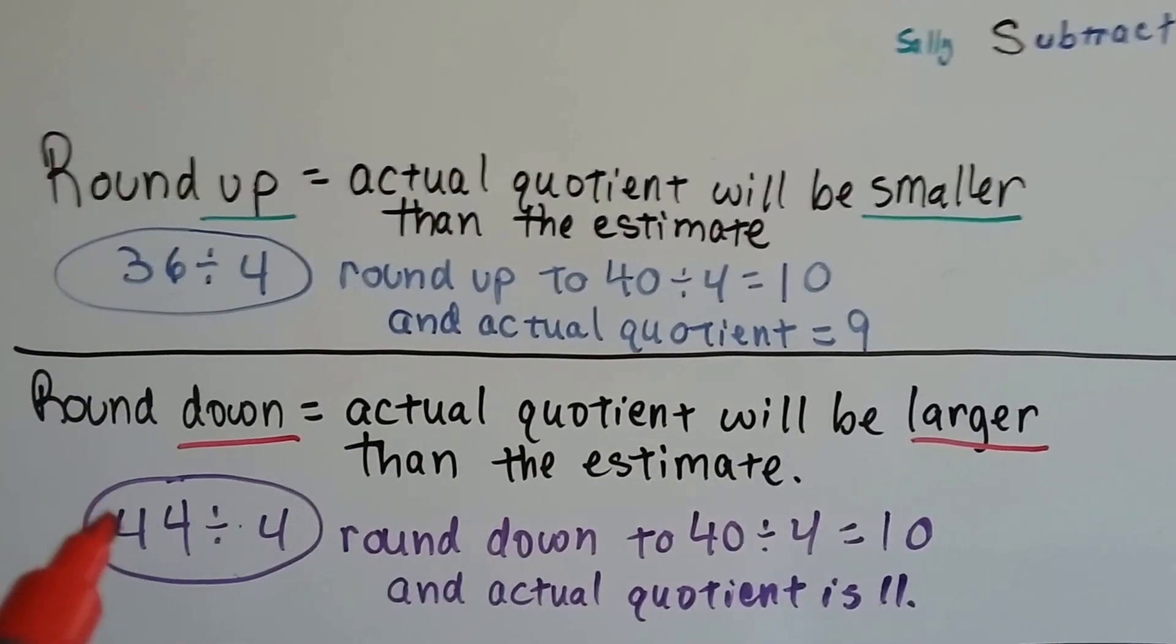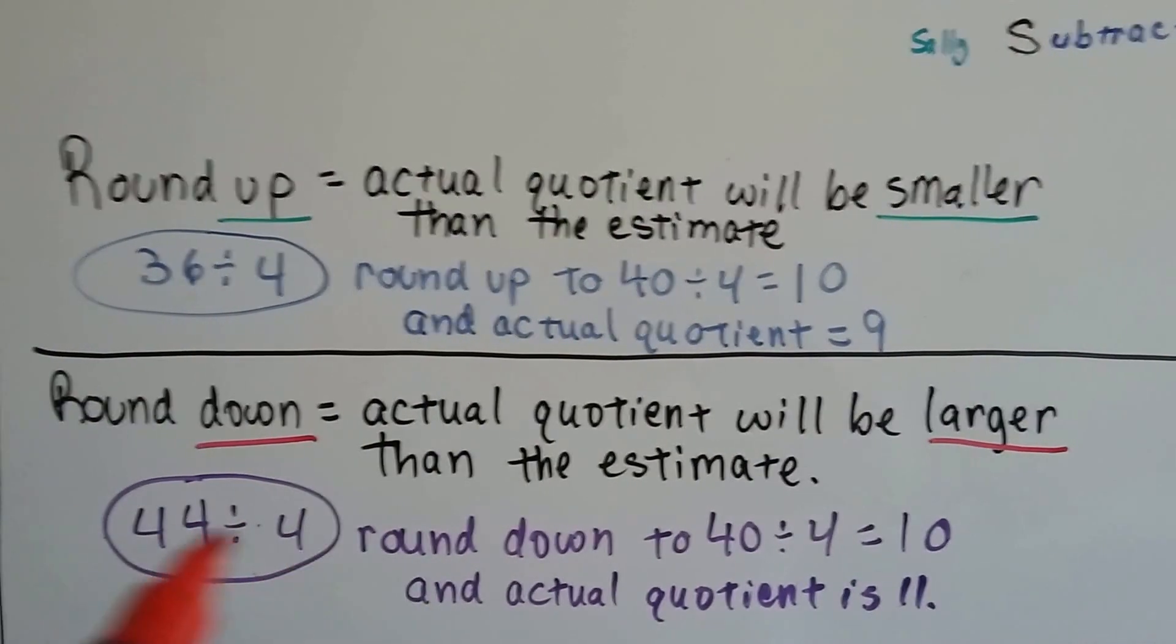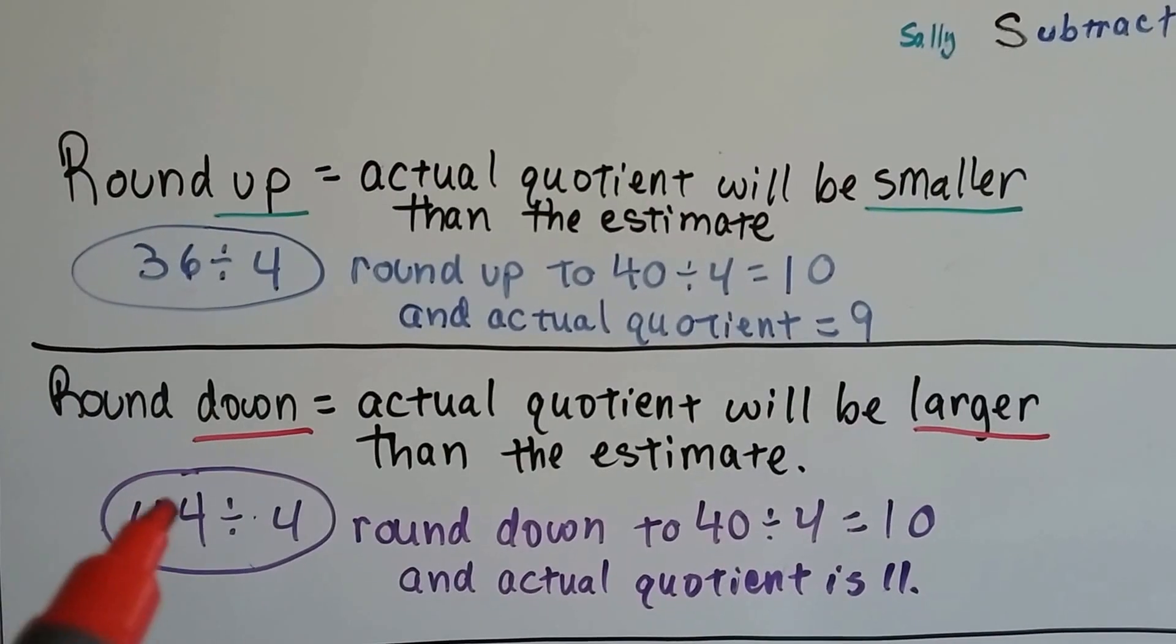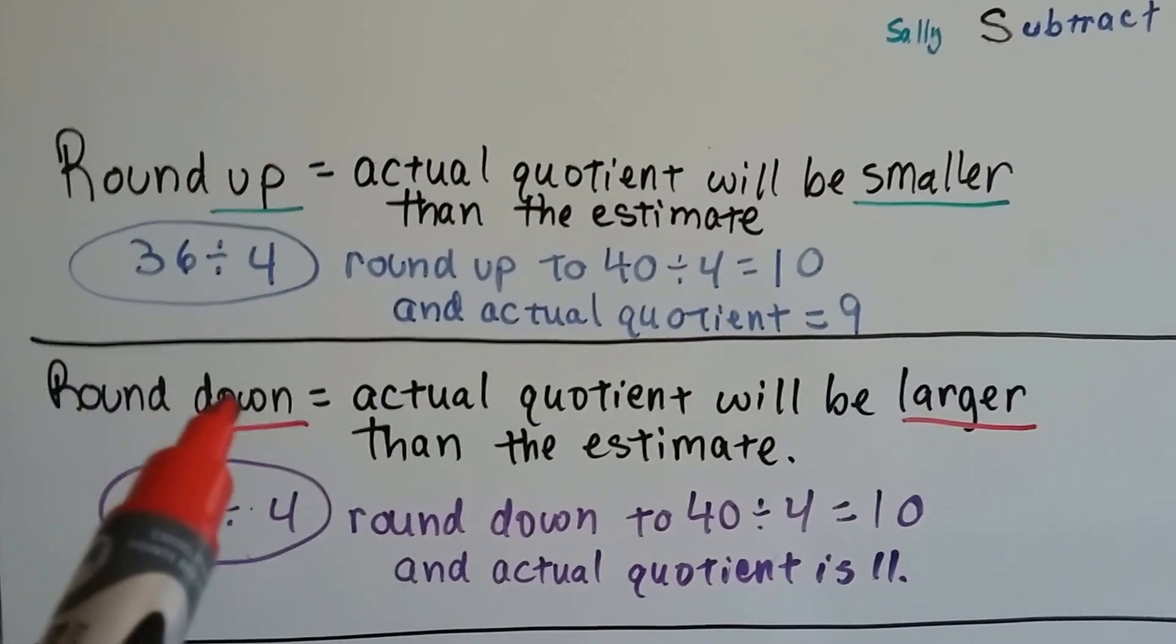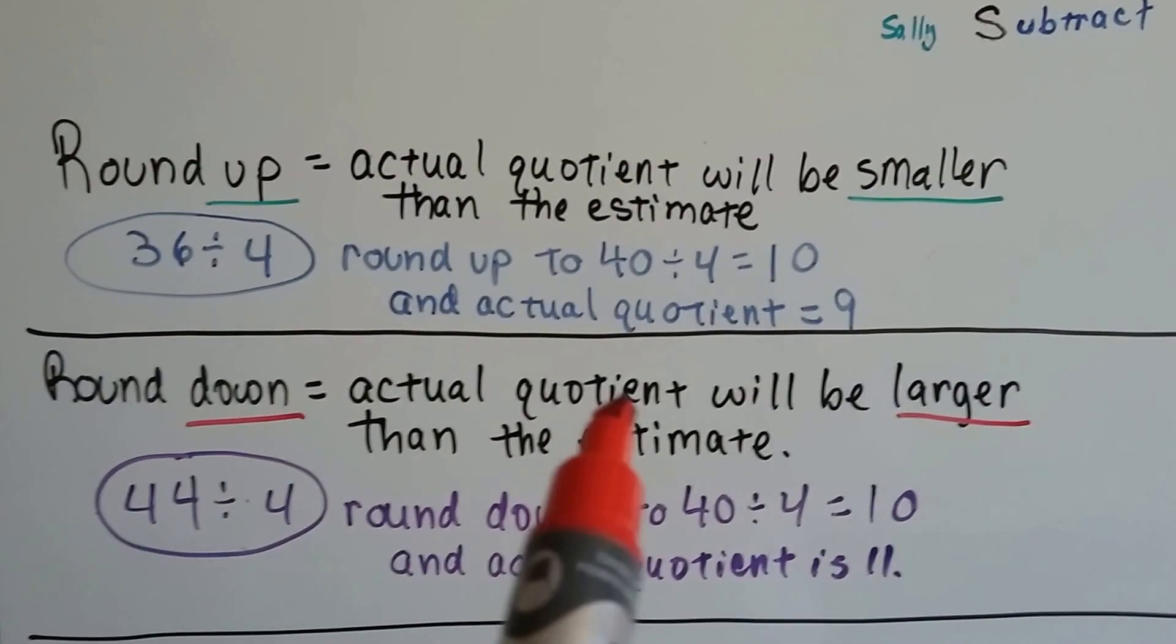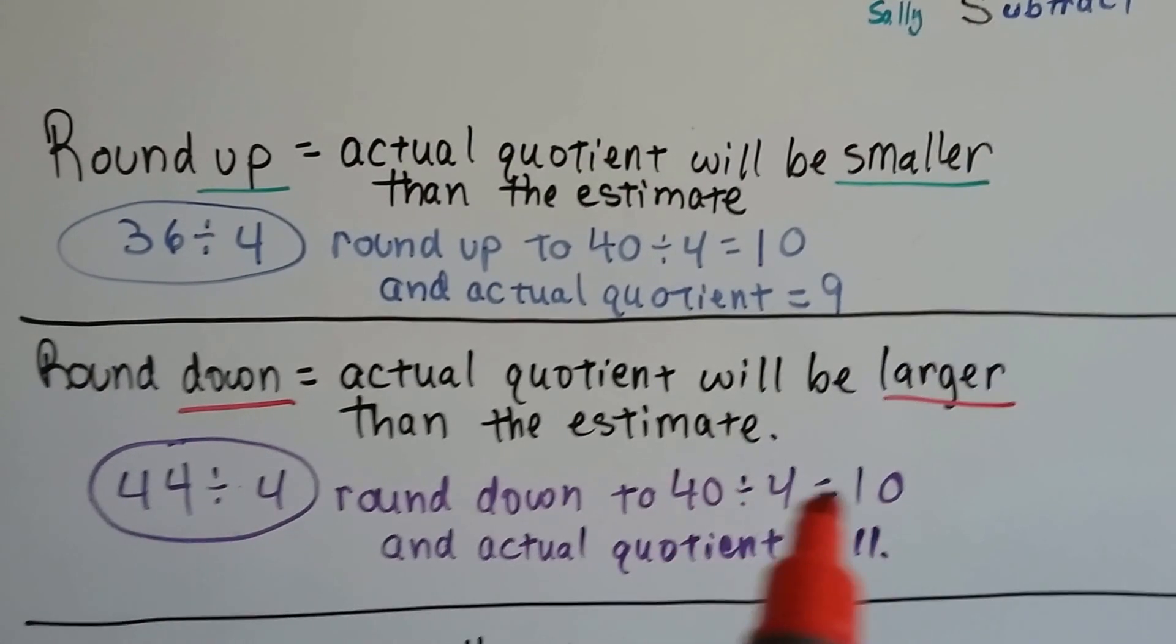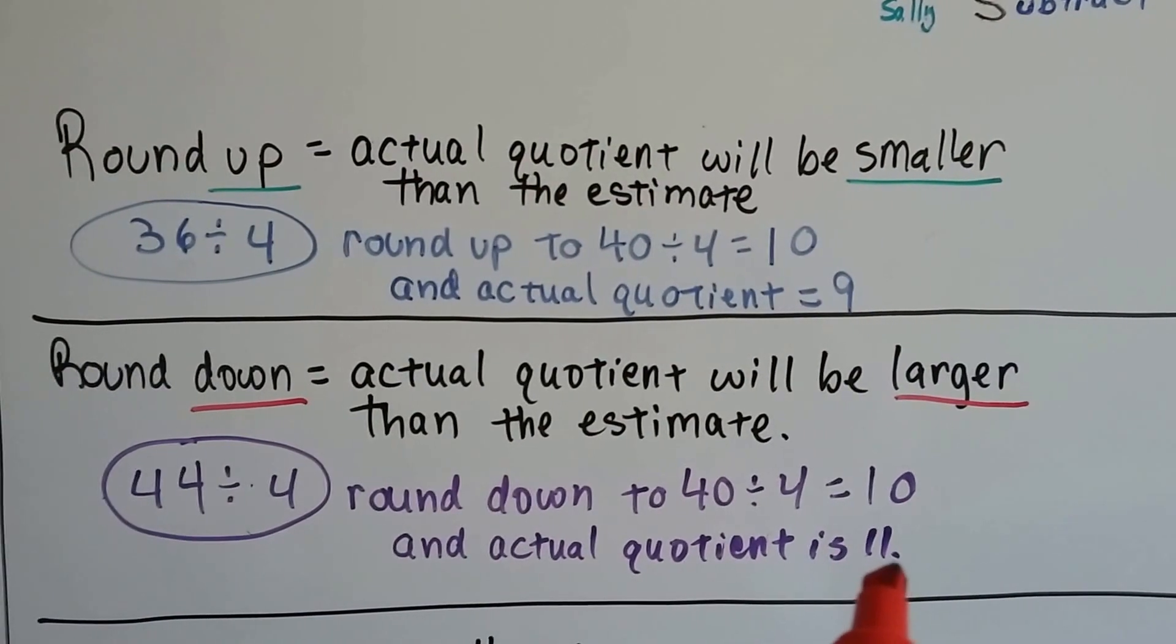If we have forty-four divided by four, we know that that's eleven from our four times table. But if we round down and make this a forty, by rounding down, the actual quotient is going to be larger. Because it should have been forty-four, but we made it a forty, so we made it ten instead of the eleven.